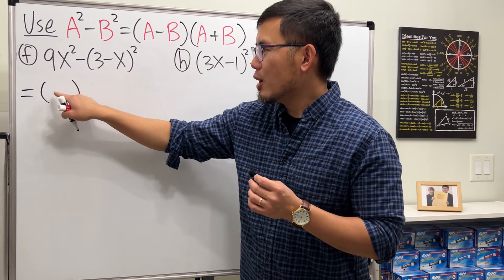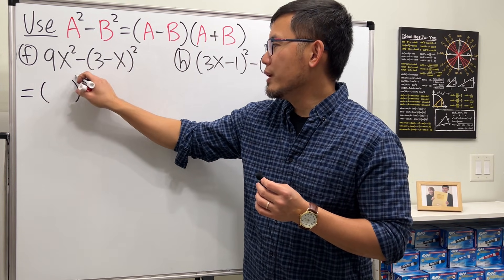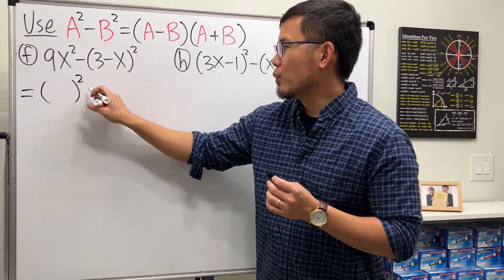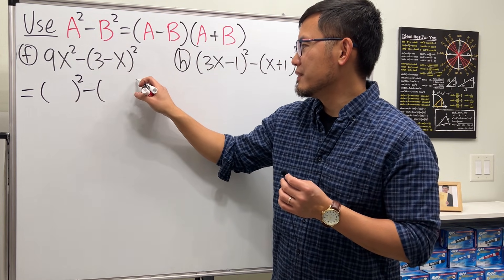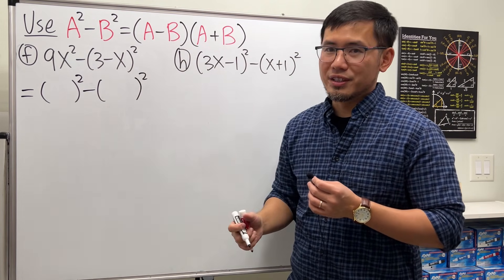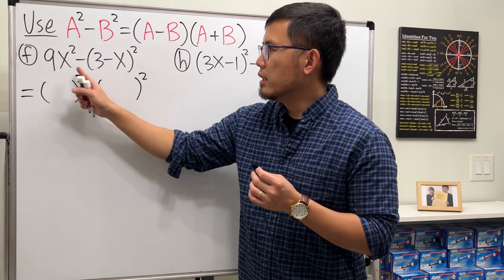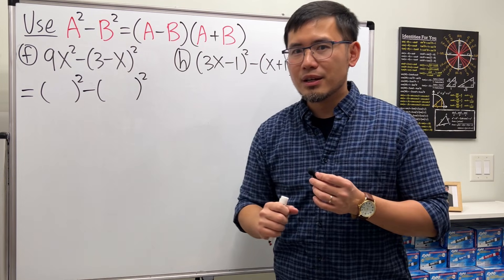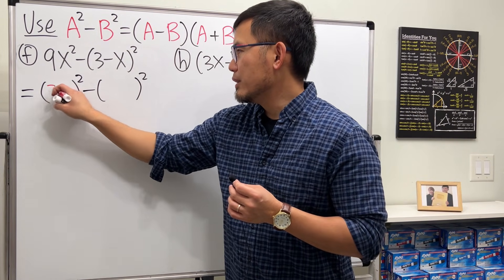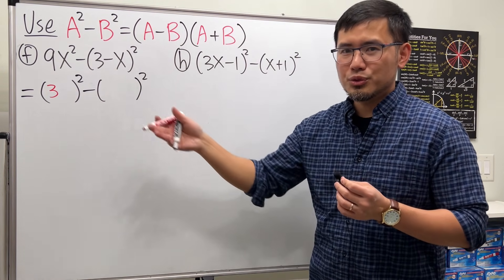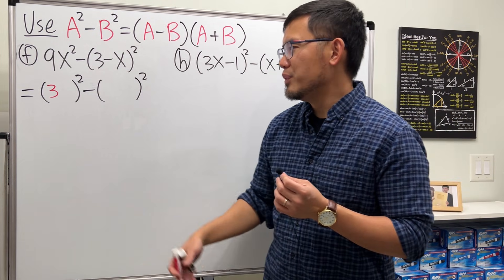And then for the other one, it's nice enough because it's done for us already. For this, you have to ask yourself what square is equal to 9, and the answer is 3. I know you can say, hmm, how about negative 3? Don't, just use positive. If you use negative you can factor out negative, that's weird. Just positive, that's usually the way to go.